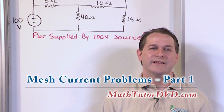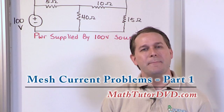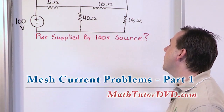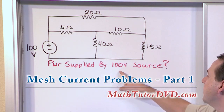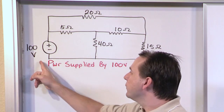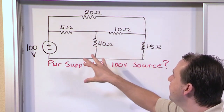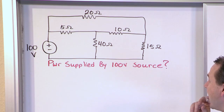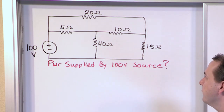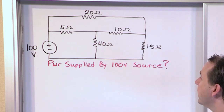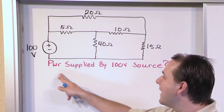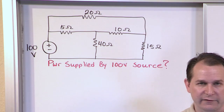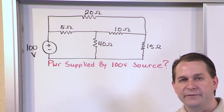Hello and welcome to this section of the circuit analysis tutor. Here we're going to use the mesh current method to solve this problem on the board, which is: what is the power supplied by the 100 volt source? We have a 100 volt source and a resistor network. To find the power supplied by the source, we need to know the current flowing through it, then we can do I times V to get the power.